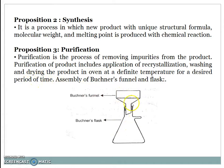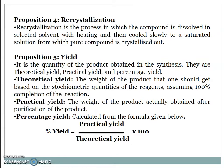This is the assembly of Buchner funnel and flask, and this assembly is used for purification of the drug. Proposition 4: Recrystallization. Recrystallization is the process in which a compound is dissolved in a selected solvent with heating, and then cooled slowly to a saturated solution from which the pure compound is crystallized out. Proposition 5: Yield. It is the quantity of product obtained in a synthesis. There are theoretical yield, practical yield, and percent practical yield.